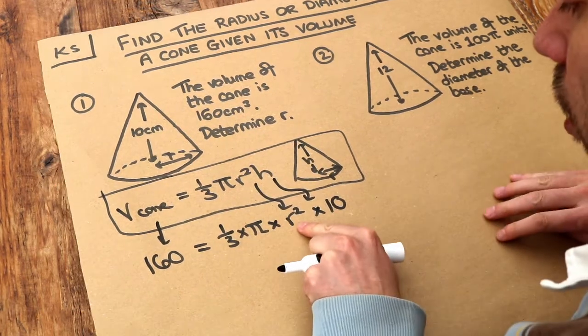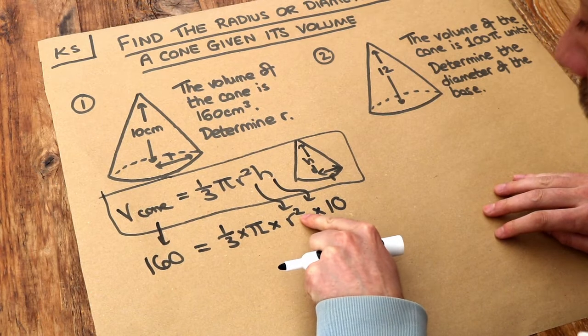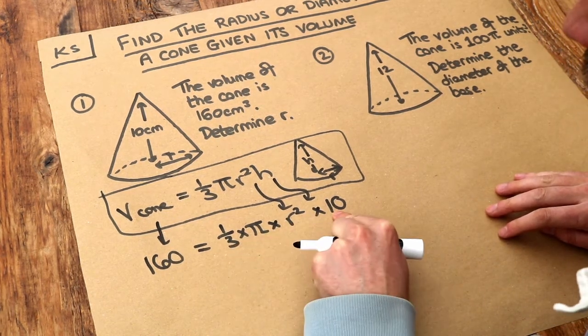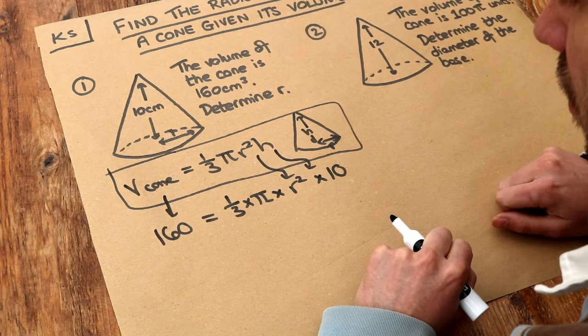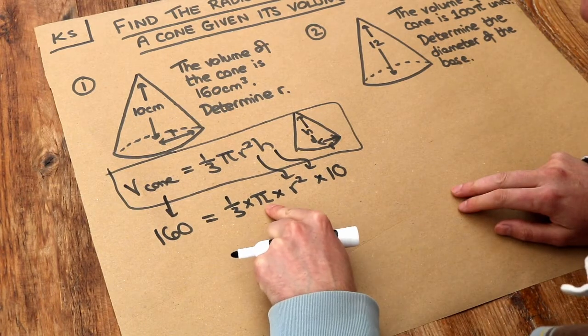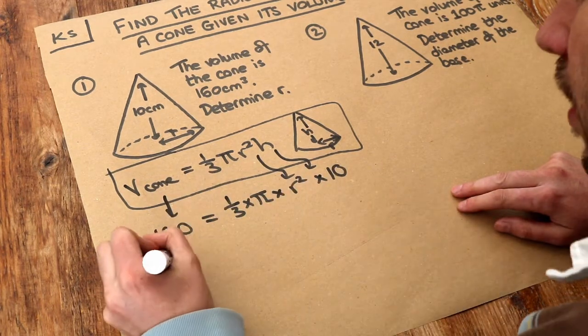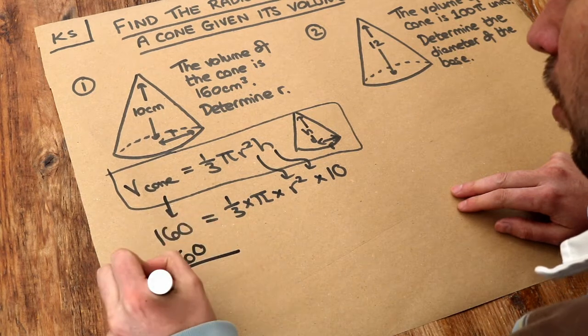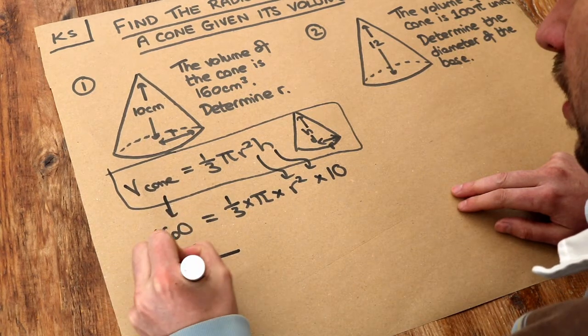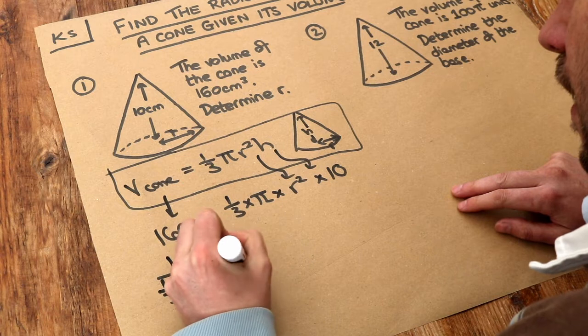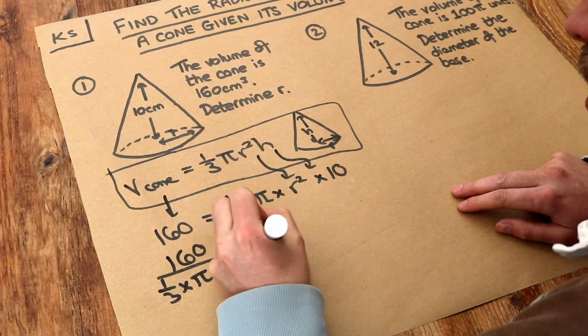Now we want to get r on its own. r squared has been multiplied by the one third, the pi, and the 10. So we could just divide both sides of the equation by the third, the pi, and the 10 to get rid of them. So 160 over one third times pi times 10, and that's going to leave us with r squared.